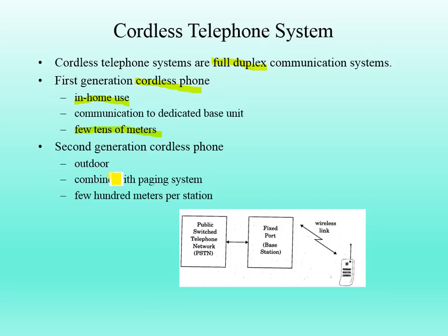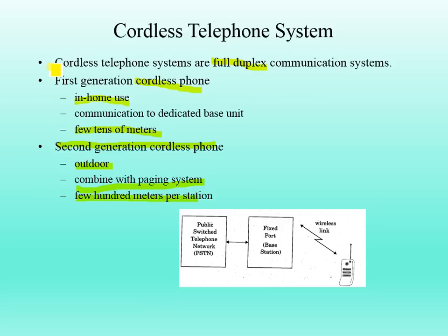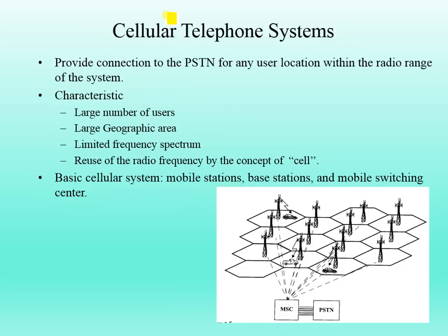The first generation requires you to set up a small base transmitter so your cordless phone can receive the required signal. The second generation cordless phone can be used outdoors as well. It is combined with a paging system so you can also receive brief messages. It covers a wider area — a few hundred meters per station — and in a city you can easily roam using a cordless system.